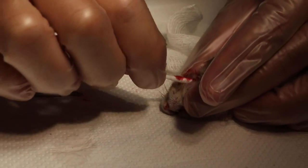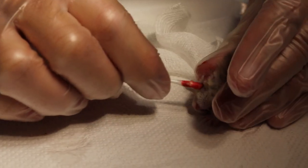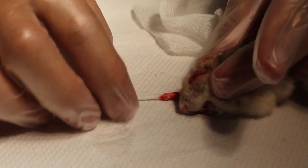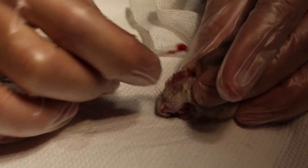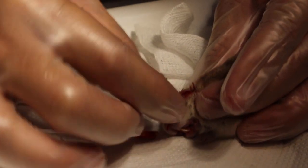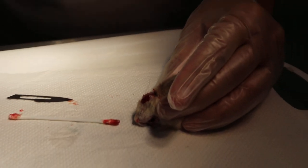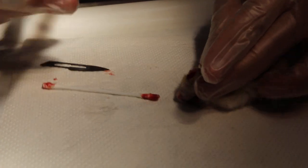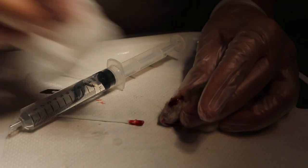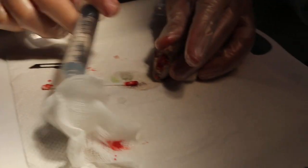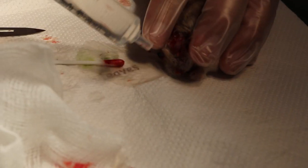A big incision so that, now hamster is waking up, hamster is waking up so I have to be fast. Now there is some more pus coming out from inside. So I will use the syringe to syringe away the bacteria and pus inside the abscess.